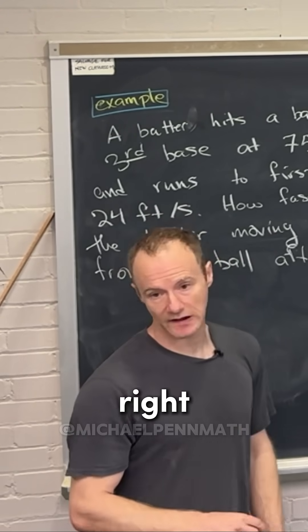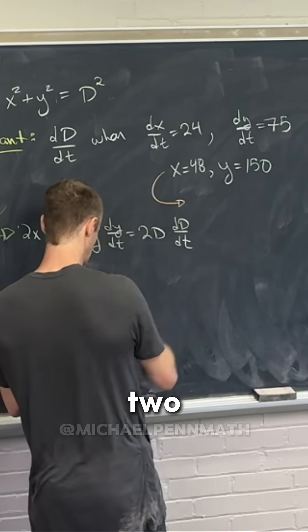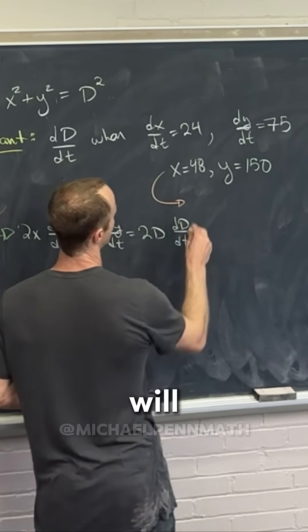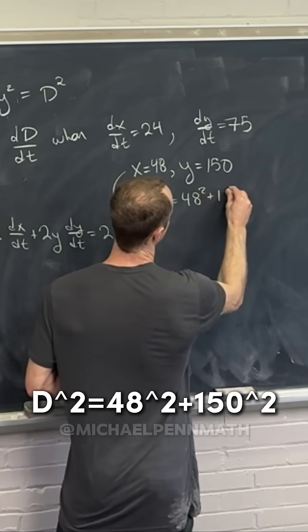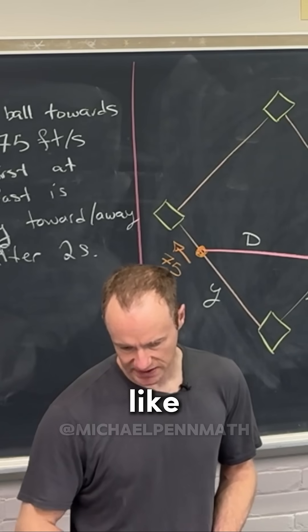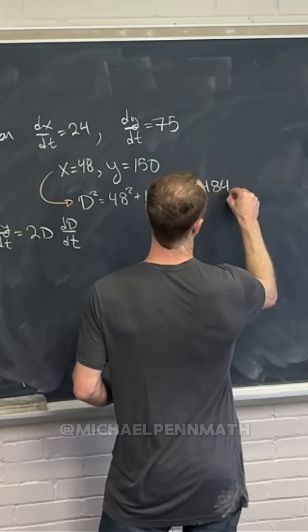We can grab that from these two. Observe that d squared is equal to 48 squared plus 150 squared, so that's 24,804.